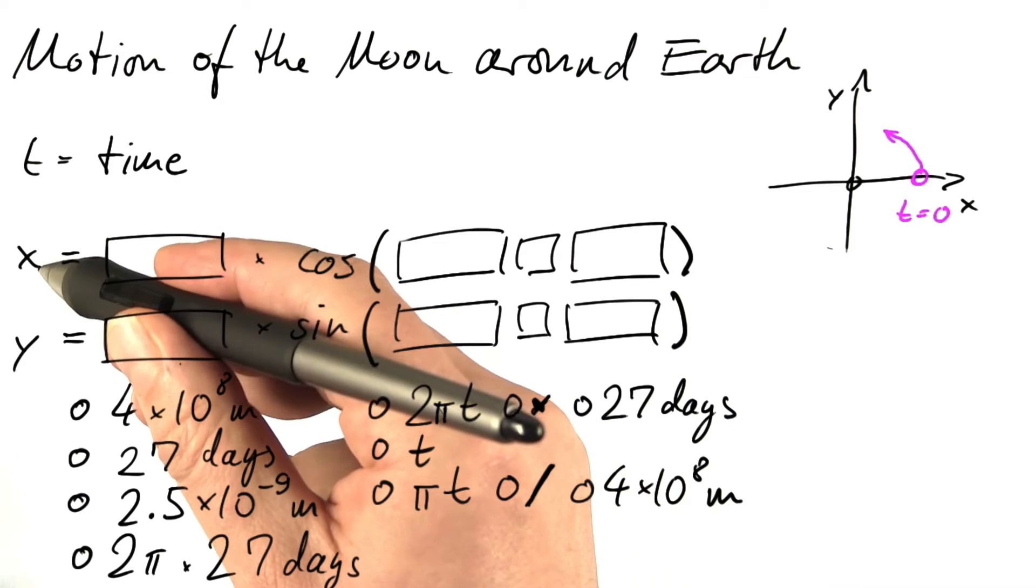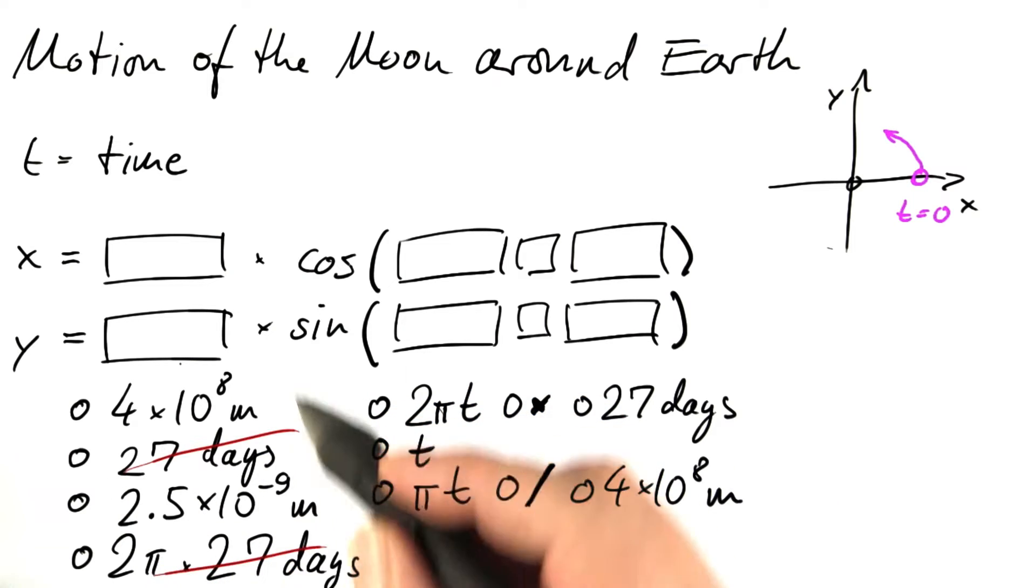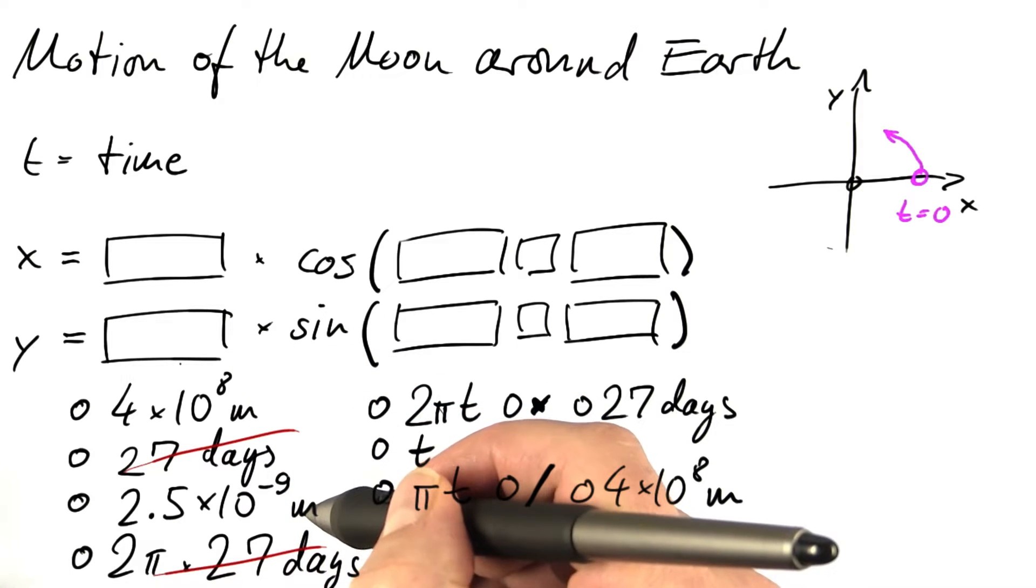The result is not measured in days. We can immediately reject these. The result is measured in meters. It can only be this one or that one.